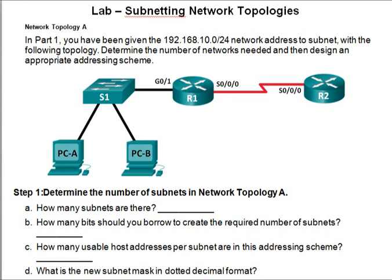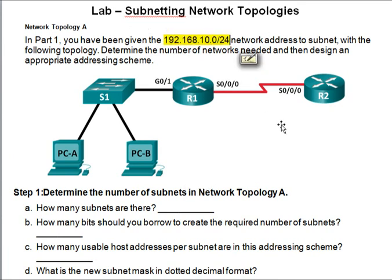In this lab, we are going to do some basic subnetting for an IPv4 network. Before we begin, we examine the question given. The network address given is 192.168.10.0/24. We are going to subnet this network into smaller subnets using this diagram over here.